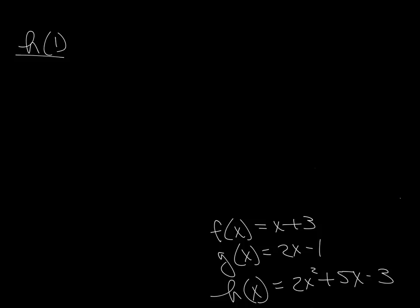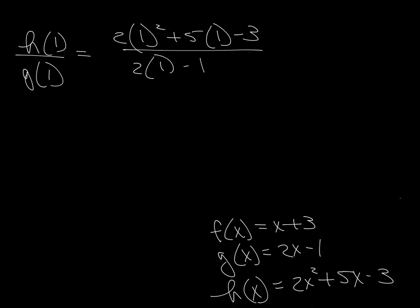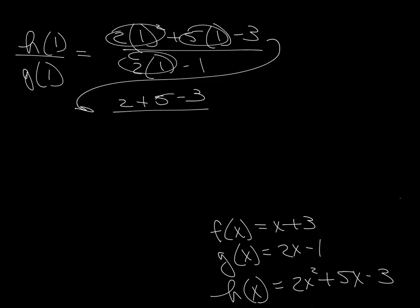The next one is H of 1 divided by G of 1. So they want us to put in 1 for H, so 2 times 1 squared plus 5 times 1 minus 3, over the G of 1, which is 2 times 1 minus 1. This is going to give me 2 plus 5 minus 3 over 2 minus 1 is 1. So 7 minus 3 is 4 over 1 which equals 4.